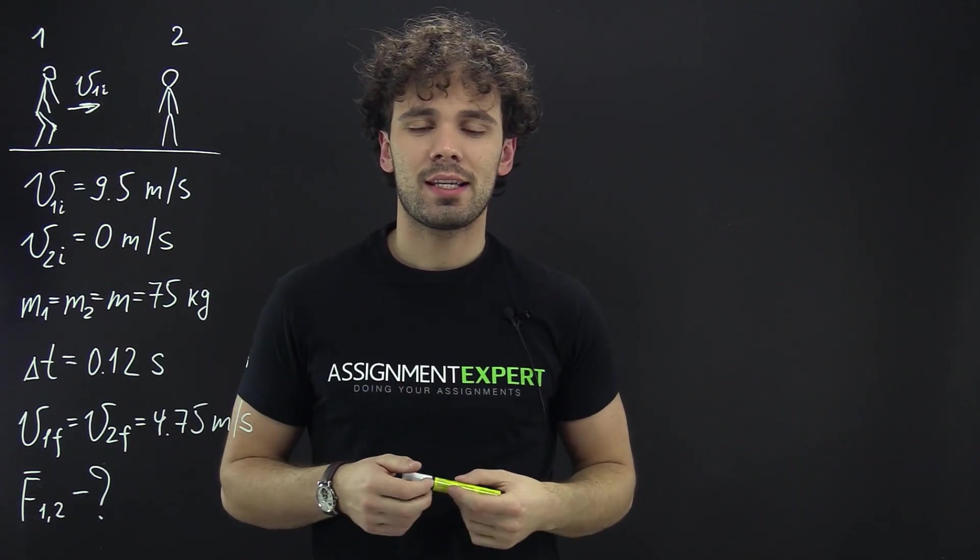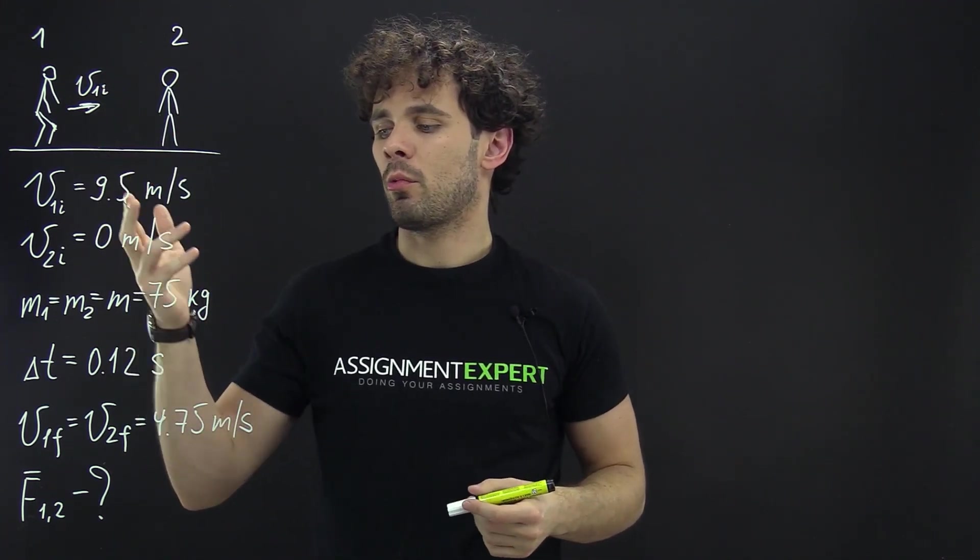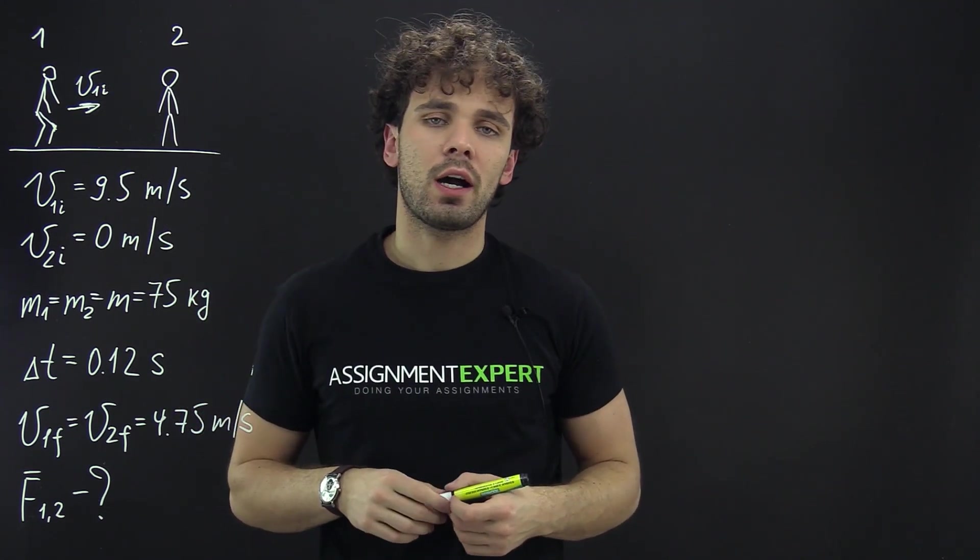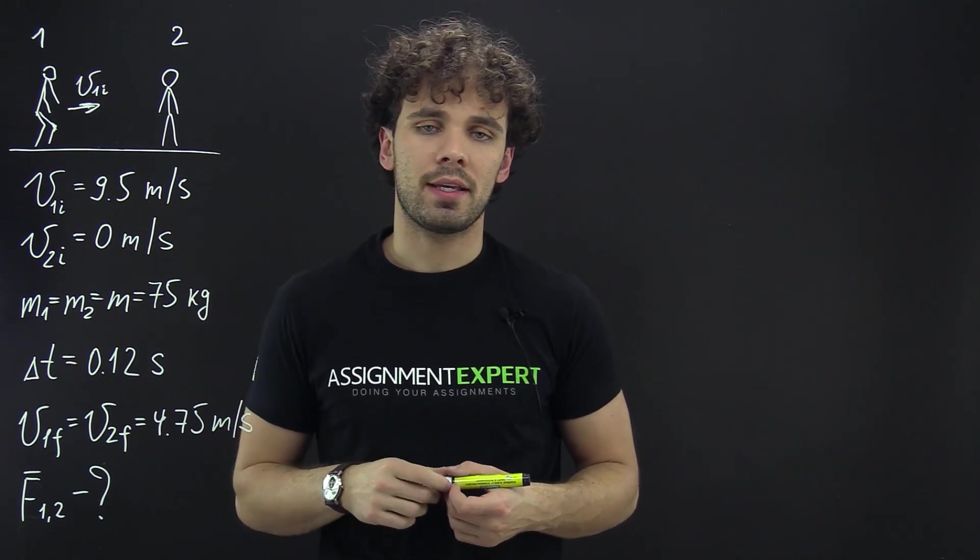Hello guys! This is Assignment Expert. In today's example, imagine that an ice skater weighing 75 kilograms is moving with a speed 9.5 meters per second and he crashes into the stationary skater of the same mass.